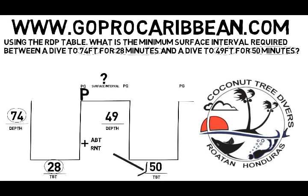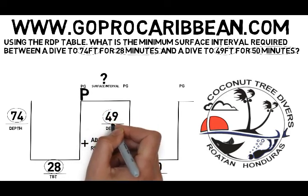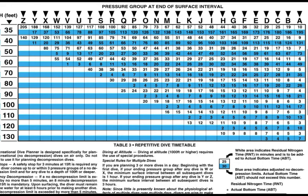The next blank is the surface interval — that is the question. So we look across to see what the next information in our diagram is, and the next two bits are the depth and time of the second dive. We need to find a way to use that information on the table to fill in one of the blanks. What we can do is find on side two of the table the depth of 50 feet.